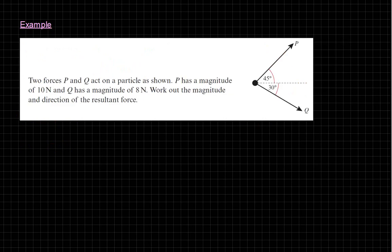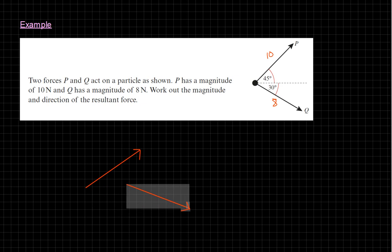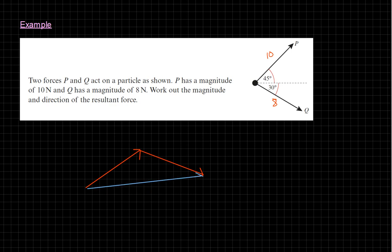Now it gets more interesting with force triangles. We have an object with two forces: P = 10 newtons and Q = 8 newtons. Work out the magnitude and direction of the resultant force. What I suggest is to think about the geometry — rearranging the forces head to tail — and the resultant is the vector from the overall start to finish.